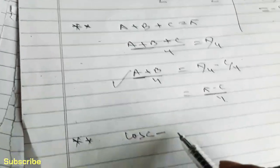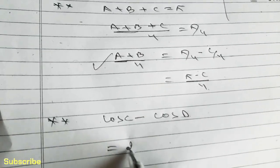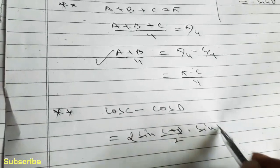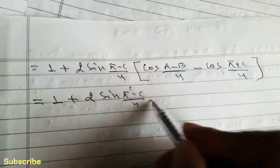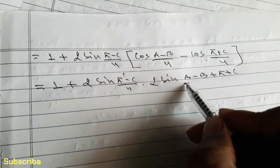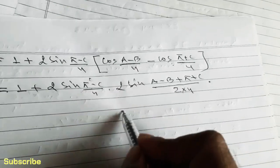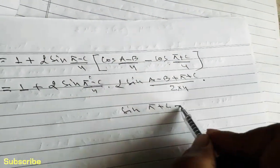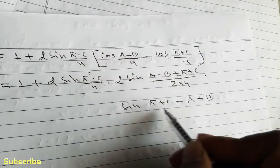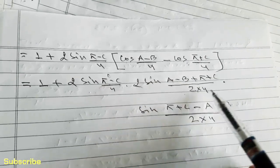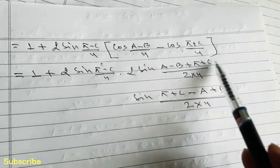Using the formula of cos C minus cos D, which is 2 sin(C plus D by 2) into sin(D minus C by 2). With the factor of 4 in the denominators, when we take LCM 4 as it is, this 2 from the formula and the existing 2 combine to give 4.